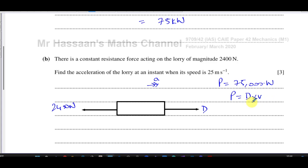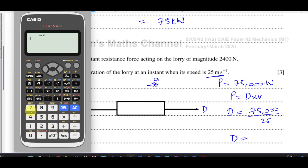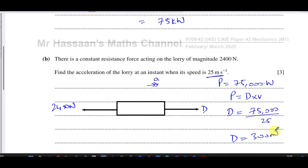So we can work out what the driving force is, because we know at the instant that we're trying to find the acceleration, the speed is 25 meters per second. So we say the driving force is equal to the power, which is 75,000 divided by 25. So that's going to give us the value of D. So we have 75,000 divided by 25. That gives us 3000 newtons. So that's the driving force, 3000 newtons.